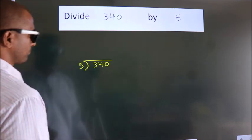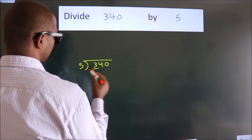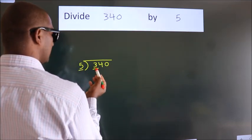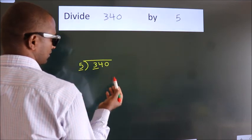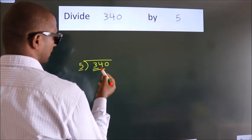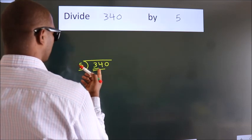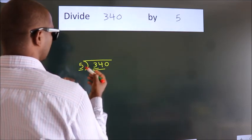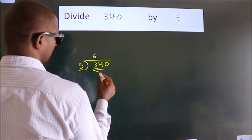Next, here we have 3, here 5. 3 is smaller than 5, so we should take two numbers: 34. A number close to 34 in the 5 table is 5 times 6, which is 30.